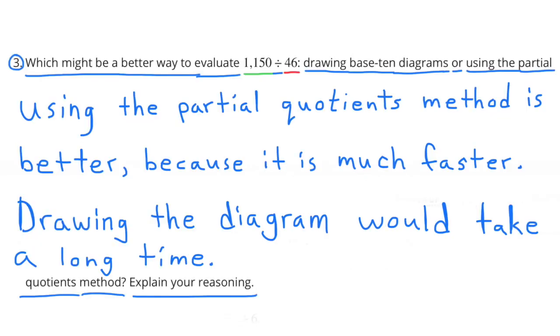Number 3. Which might be a better way to evaluate 1,150 divided by 46: drawing base 10 diagrams or using the partial quotients method? Explain your reasoning. Using the partial quotients method is better because it is much faster. Drawing the diagram would take a long time.